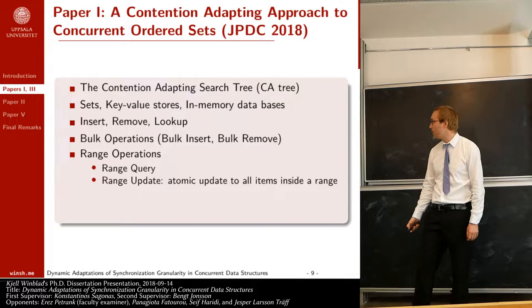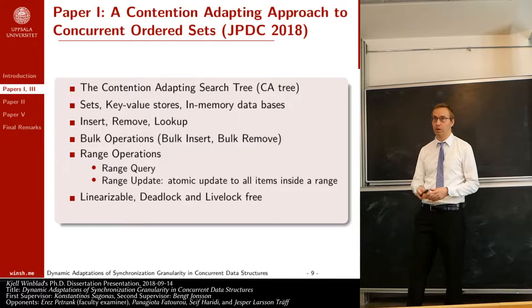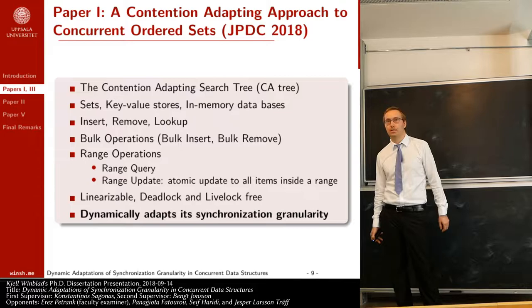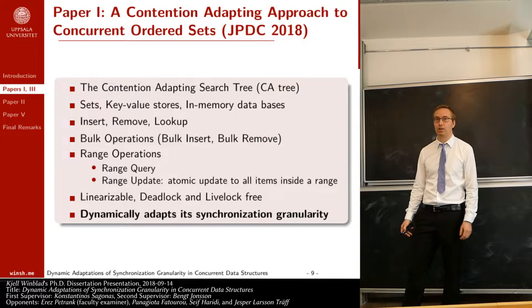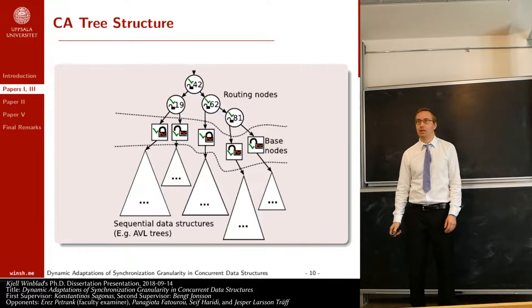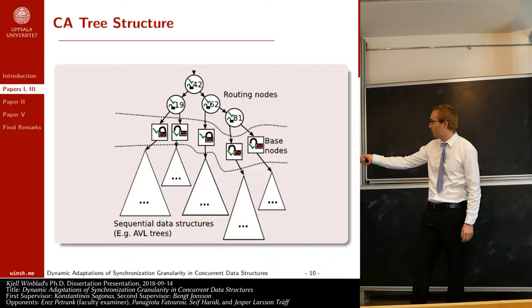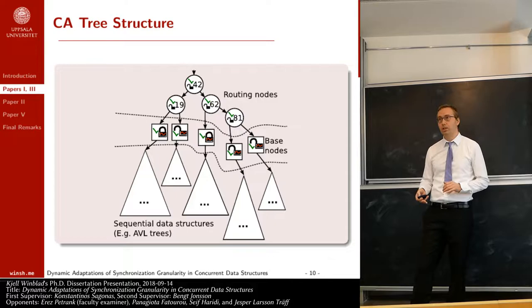In this paper I provide sketches for correctness proofs showing that all operations are linearizable, and both deadlock and livelock free. What is new and special about the CA tree is that it dynamically adapts its synchronization granularity to the workload at hand. All items stored in the data structure are located in sequential data structures at the bottom, which can be balanced search trees like AVL trees, or other data structures — the important thing is that they can be split and joined efficiently.